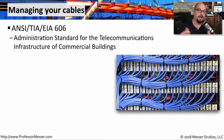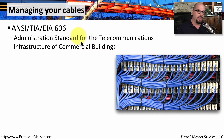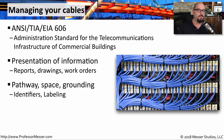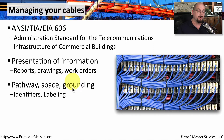As network professionals, we deal with a lot of different network cables, and there is a standard for administering this: the ANSI/TIA/EIA-606, the administration standard for the telecommunications infrastructure of commercial buildings. This provides information on how to document the network, including sample reports, how you would draw out the network, and how work orders might look. You have many different cables going many different places on your network, and you need some way to identify them — whether in a pathway, a space, or grounding cables.